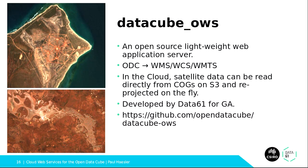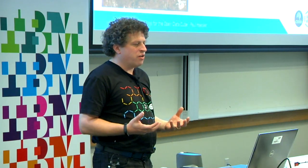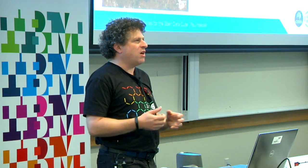The bit that I came to Data61 for is what we now call DataCube OWS — OWS is Open Web Services. It's a bit of a dull name, but we wanted to badge it as being part of the DataCube project. It's an open source, lightweight web application server written in Python 3, so it integrates directly with the Open DataCube. It publishes standard OGC geospatial web service protocols. The metadata is stored in the database, but the data itself can be stored in S3 and pulled down as needed and reprojected on the fly. This means there's a whole lot of calculations we can do dynamically as the data is being requested that just wouldn't be possible in a more traditional architecture.